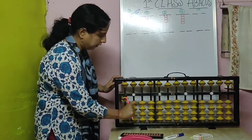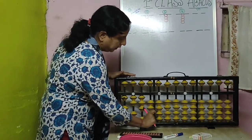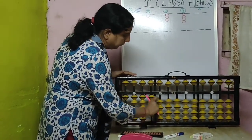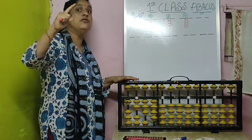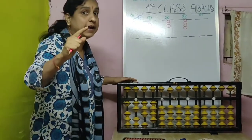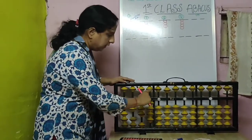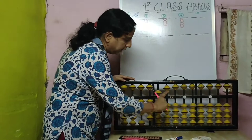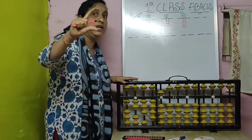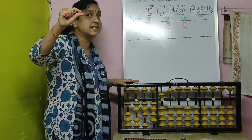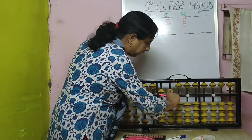1 is this. This is 2. This is 3. This is 4. Index finger is for 5. Do you remember that last time I had told you? This is 5. And then upper bead — 1 upper bead, 1 lower bead is for 6. Last time I taught you. This is 6.